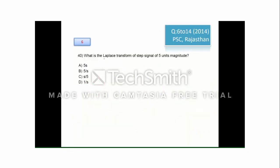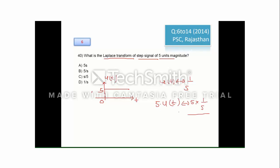For question number 6, we find the Laplace transform of a step signal of 5-unit magnitude. A unit step signal exists from 0 to infinity with amplitude 1, and its Laplace transform is 1/s. Therefore, for a step signal of magnitude 5, the Laplace transform is 5/s. Option B is the correct answer for question number 6.